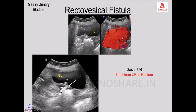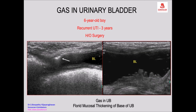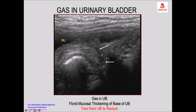A tract from the bladder to the rectum indicates a rectovesical fistula. If you see closely, when you look for the bladder you see florid mucosal thickening in the left side of the base of the urinary bladder. When you look carefully at the posteriorly placed rectum which contains gas, this may be a fistulous tract from the bladder to the rectum - a rectovesical fistula.